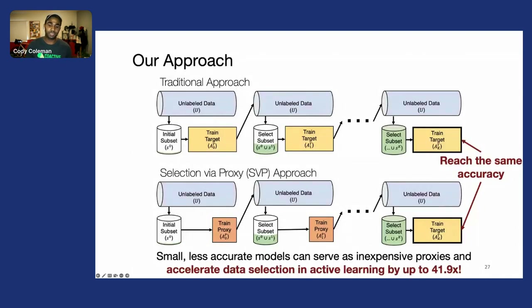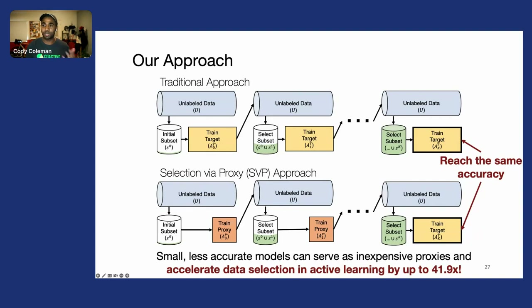This allows us to accelerate data selection and active learning by close to 42x—a massive improvement—allowing us to scale to datasets we couldn't efficiently work with before.